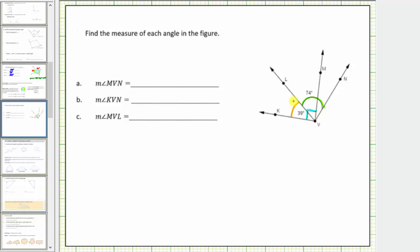We're asked to determine the measure of three angles. Notice angle KVN is the large angle, and therefore the measure of angle KVN must equal the measure of angle KVL plus the measure of angle LVN. The measure of angle KVN equals 39 degrees plus 74 degrees, which equals 113 degrees.